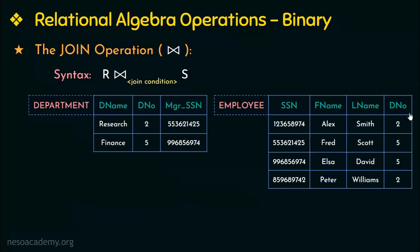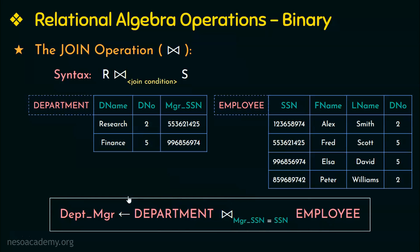Now if I want to retrieve the details of the managers of each department, I have to combine each department tuple with the employee tuples and check if their SSN values match. For this I join the department relation and the employee relation by the join condition that manager SSN is equal to SSN. I can write it using the join operator, joining the department and employee relations based on this condition.